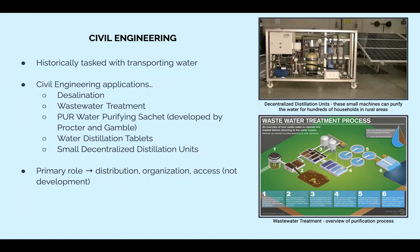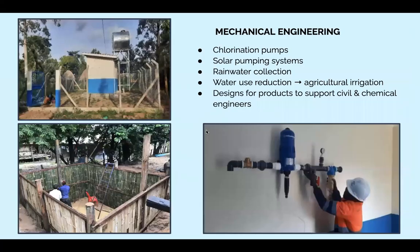This coordination between development and distribution is one way where engineers of different disciplines must communicate with each other. Further, identifying the areas that need clean water access is where civil engineers must collaborate with sociologists and non-profit organizations to deliver fresh water to the areas that need it the most. Some other systems that can be built to help give communities access to clean water include chlorination pumps, solar pumping systems, and rainwater collection.